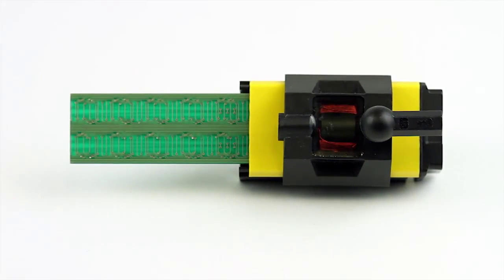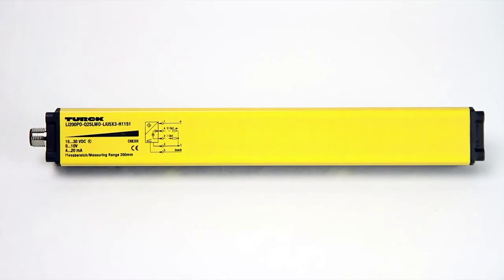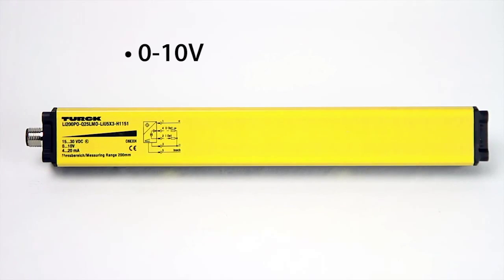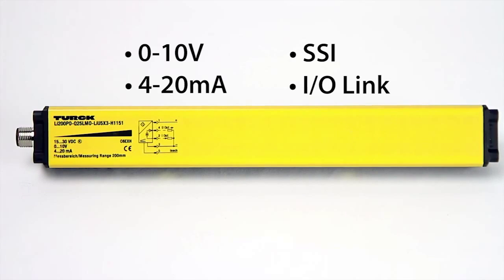Utilizing this inductive RLC circuit allows for faster and more accurate readings over many common output types, such as 0-10 volts, 4-20 milliamps, SSI, or IO-Link, as well as smaller overall packages.